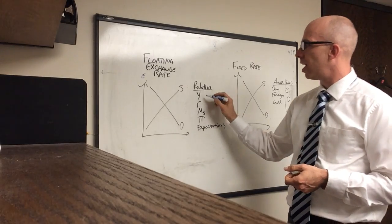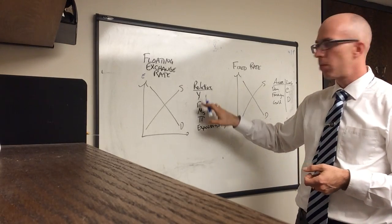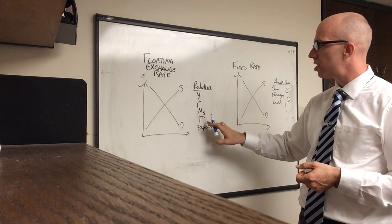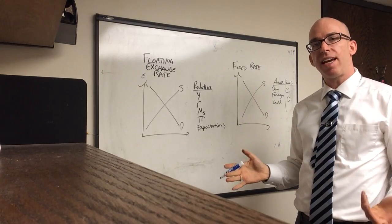Now the big things that I talk about usually are income, interest rates, the money supply, inflation, and then something I call expectations.